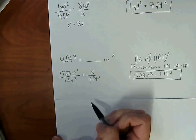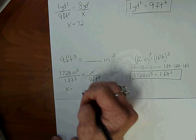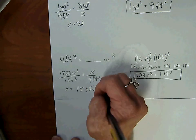Cross multiply. 1 times X is X, and 9 times 1,728 is 15,552. And that would be inches cubed.